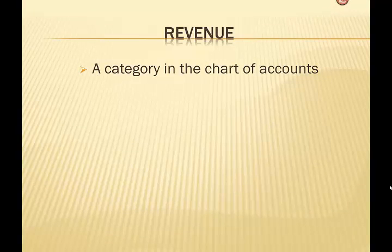In the last video on the set of books I described that the chart of accounts is what drives behavior in debits and credits. The reason for this is because every account that we set up has to be given a type or a category that it is assigned to. So for example, if we have an expense account it's going to be classified as an expense; if we have a revenue account it will be classified as revenue. In this video we're going to go through revenue accounts, that classification, and how this drives behavior of debits and credits.